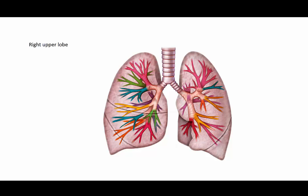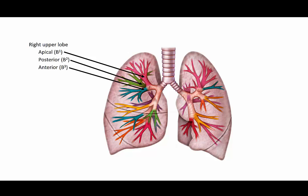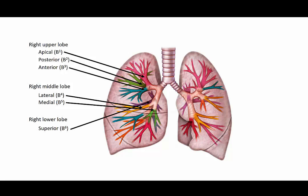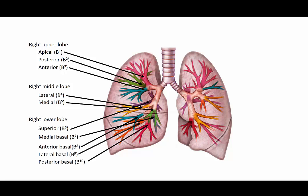The right upper lobe has three segments: apical, posterior, and anterior. The right middle lobe has two segments: lateral and medial. The right lower lobe has the most, with five segments: superior, medial basal, anterior basal, lateral basal, and posterior basal.